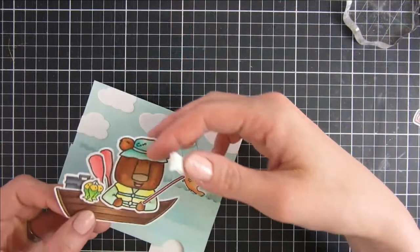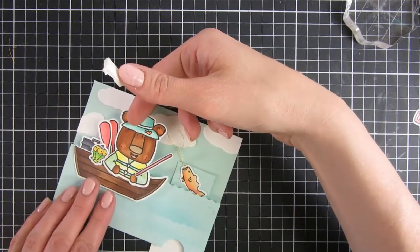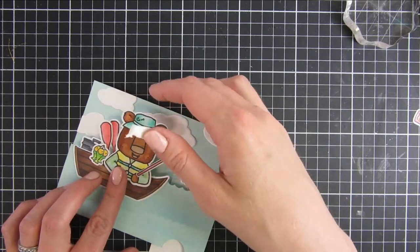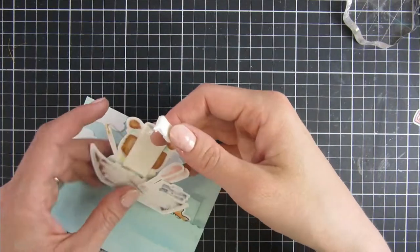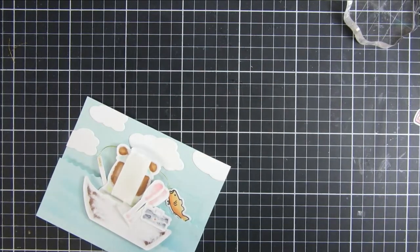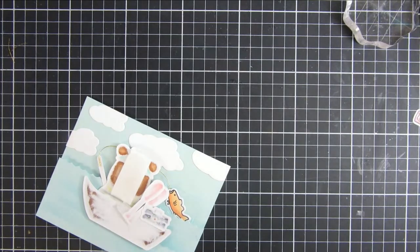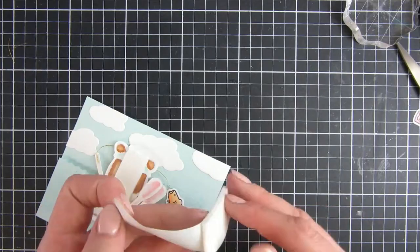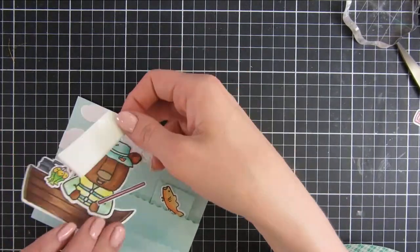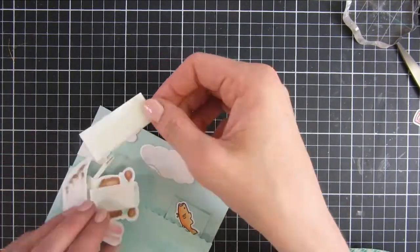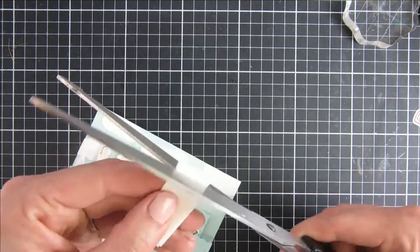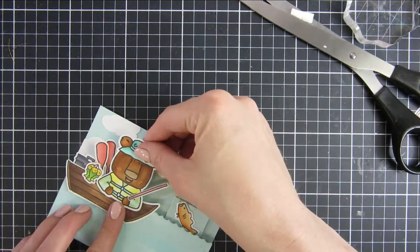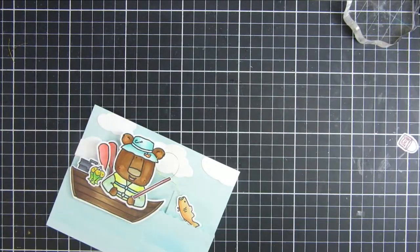So here we go. Some double-sided foam tape to the back side of our boat so everything coordinates. See here, I have a lot of foam tape here. I will actually double some foam tape up and have it on top of the bear once more, just to make sure that I have a lot of dimension. I love dimensional cards.